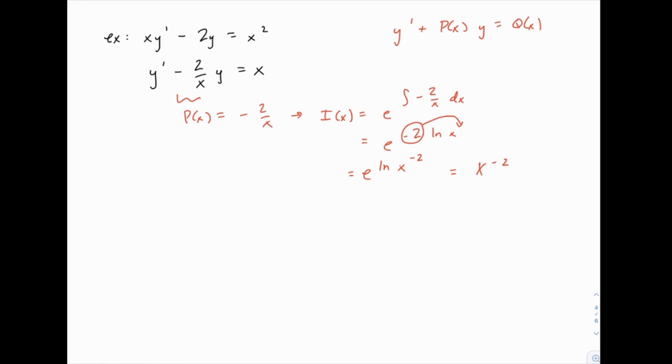When we multiply that through, the left side will automatically equal that integrating factor times y prime, and the right side will be x times 1 over x squared, which is simply 1 over x.